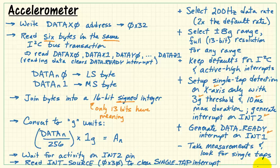In terms of taps, you wait for activity on the interrupt 2 pin. You then read the interrupt source register to clear that single-tap interrupt.